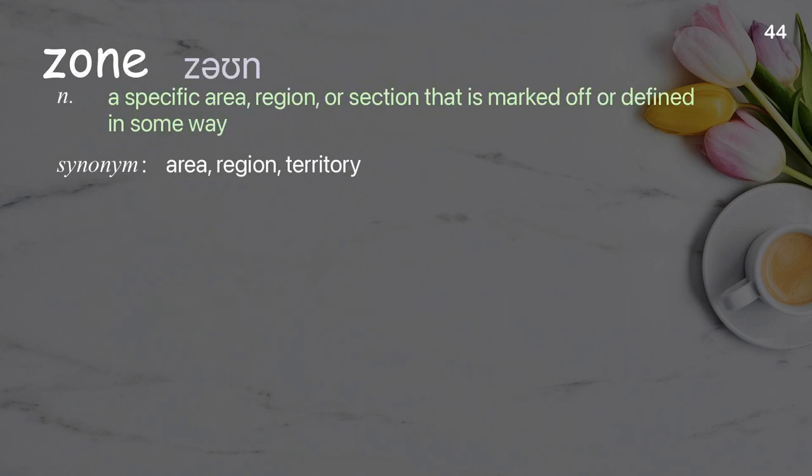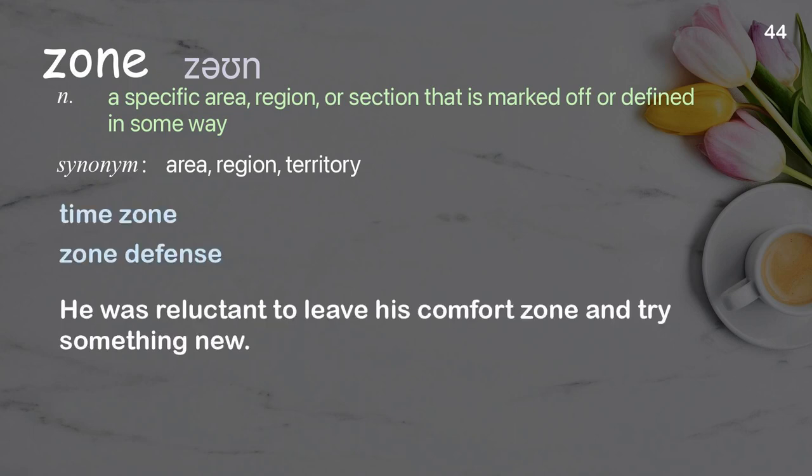Zone: A specific area, region, or section that is marked off or defined in some way. Examples: Time zone. Zone defense. He was reluctant to leave his comfort zone and try something new.